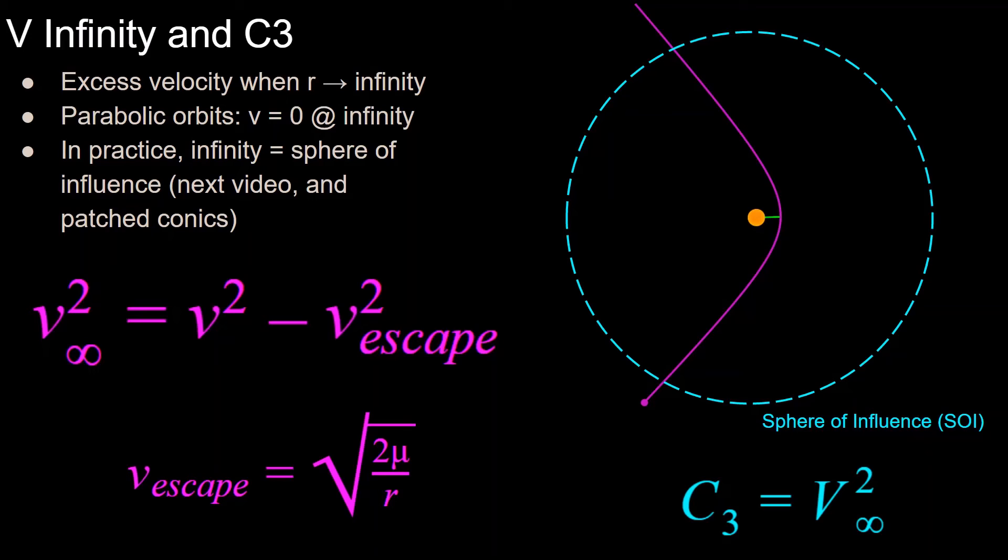So whenever we talk about approaching infinity, this refers to the two-body assumptions, where all that exists in the universe is the spacecraft and a central body. But of course, in practice, there exists more than two bodies, so instead of infinity, we use sphere of influence, which I'll be covering in depth in the next video.